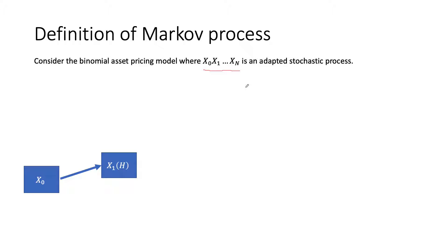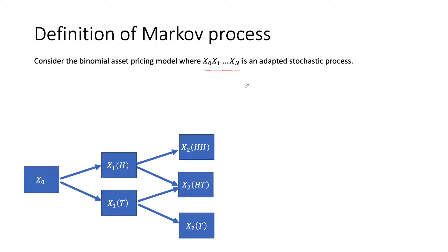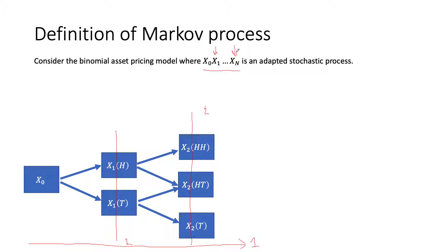If we flip a coin and get a head, we move to x1. If we get a tail, we move to x1 of T. We say this is an adaptive stochastic process if at every time — for example, at time 1 — the random variable depends only on the first coin toss. So x1 depends only on the first coin toss, x2 depends only on the first two coin tosses, and xN will depend on the first N coin tosses.